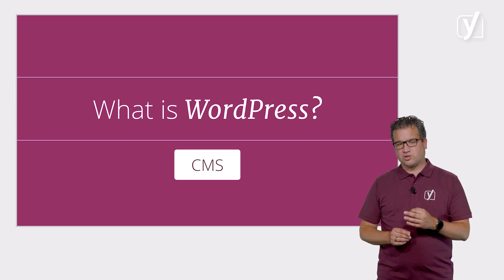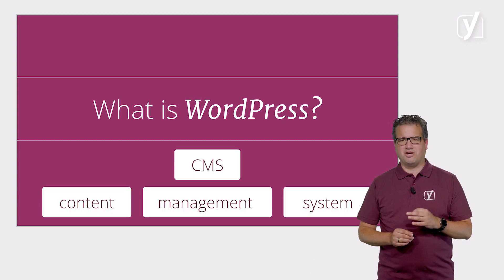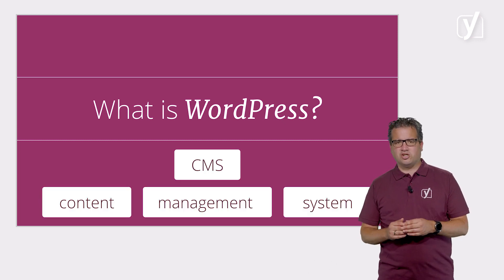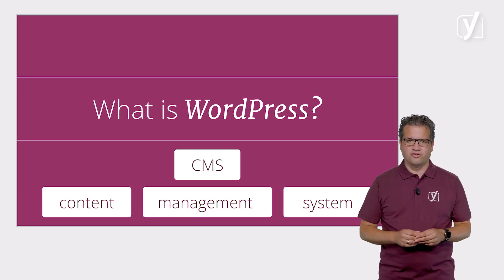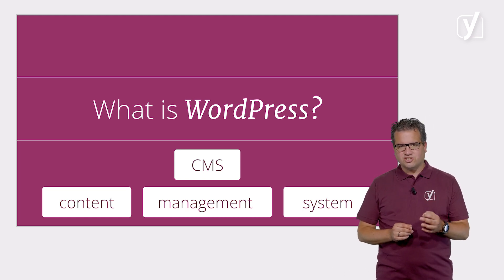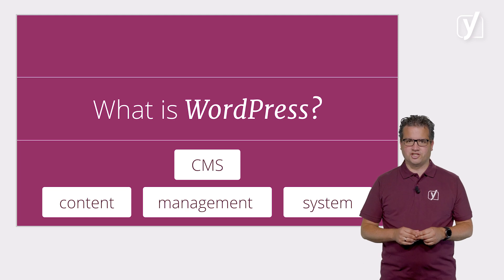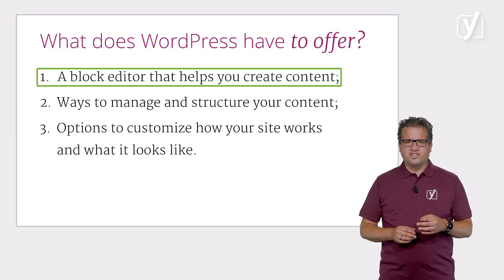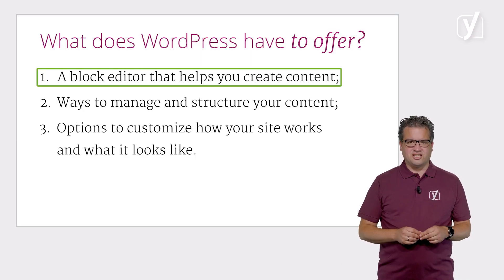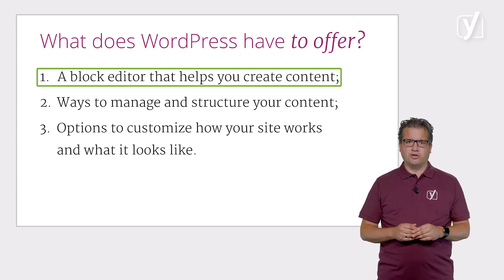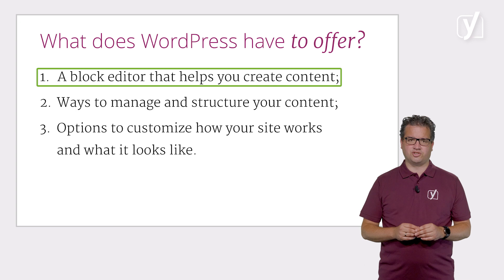WordPress is a CMS, or Content Management System. It allows you to build a website and publish content that you want to share with the world. There are basically three things that are central to what WordPress does. First, there's an advanced text editor called the block editor that helps you write content for your posts and add all kinds of media like images and videos to them.